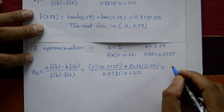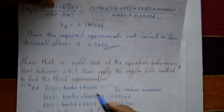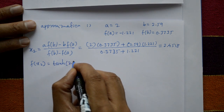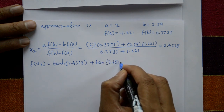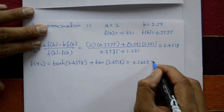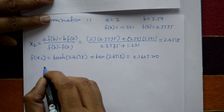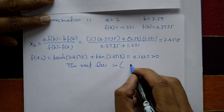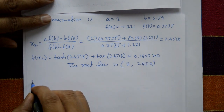x2 = 2.4518. Substituting into the equation: f(2.4518) = tanh(2.4518) + tan(2.4518) = 0.1603, which is greater than 0. Since f(x2) > 0, change b to 2.4518. The root now lies between a = 2 and b = 2.4518.